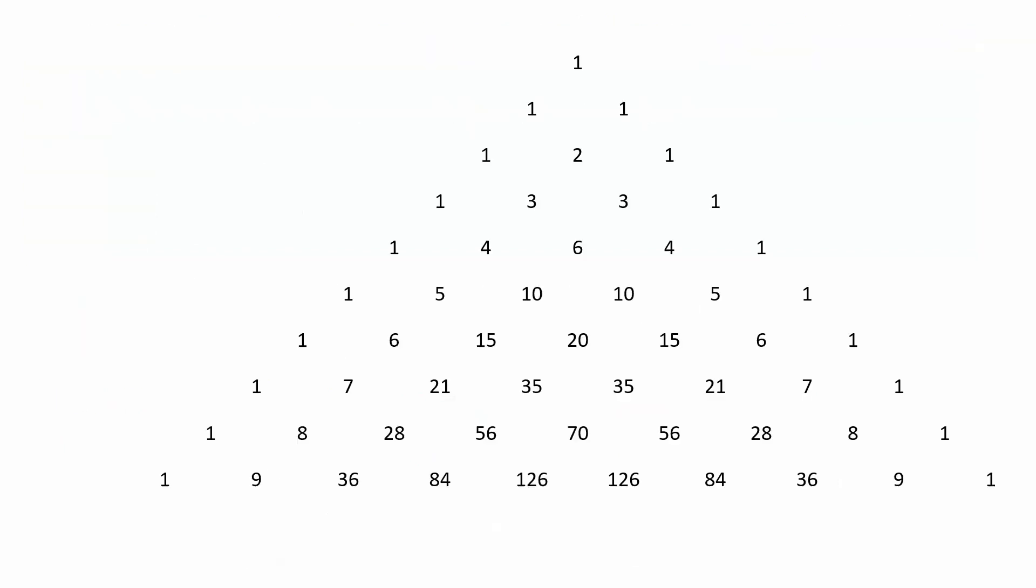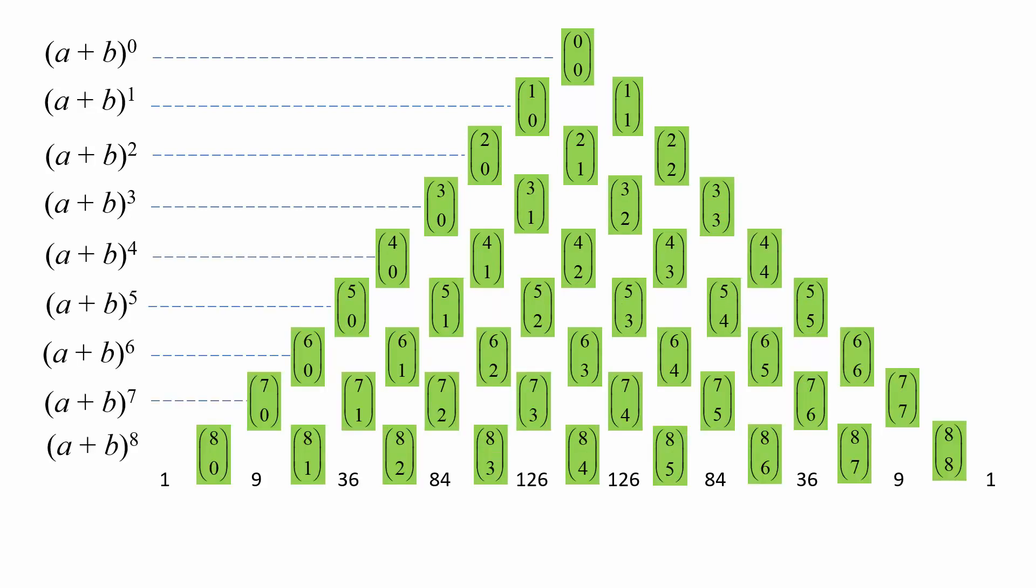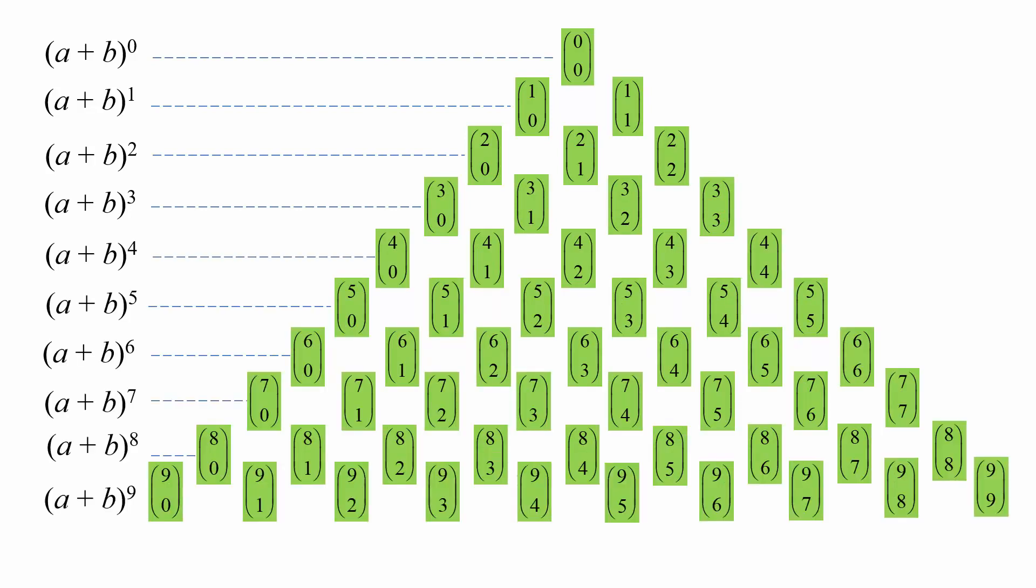Now, this is useful because with this notation, we can replace our terms of our Pascal triangle. There's our Pascal triangle using the terms we're familiar with. Let's replace them with our new notation. So the first row, 1 was replaced with 0, 0. And so on. Also shown there, as you can see, is the expansion equivalent of that, where it came from.